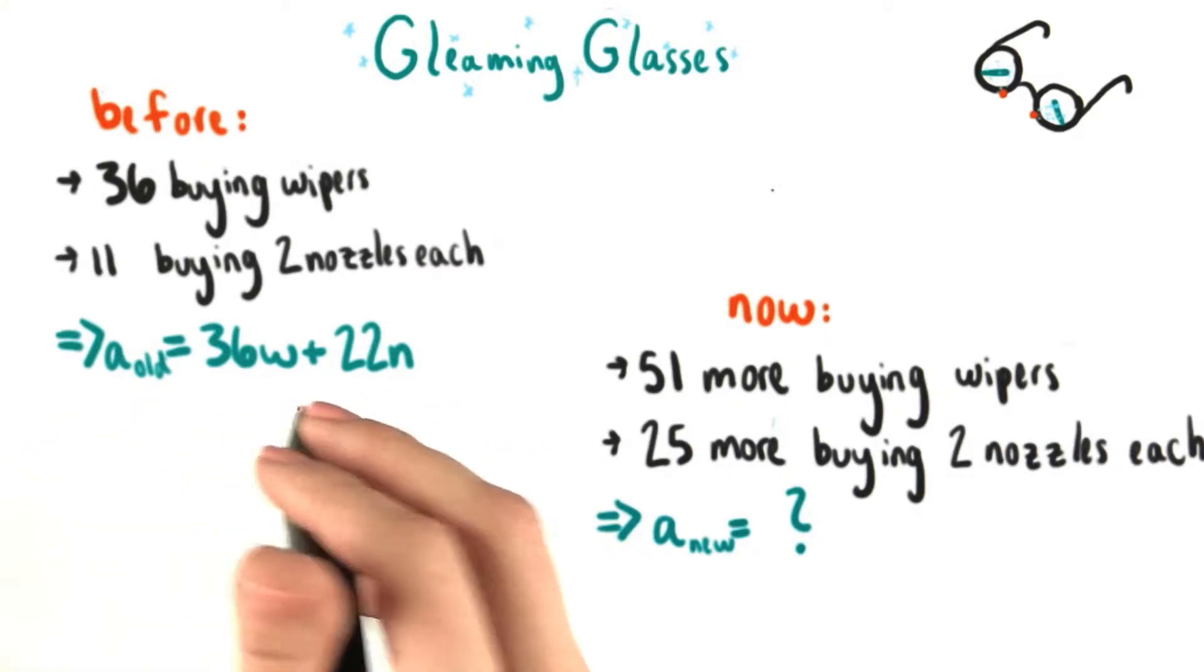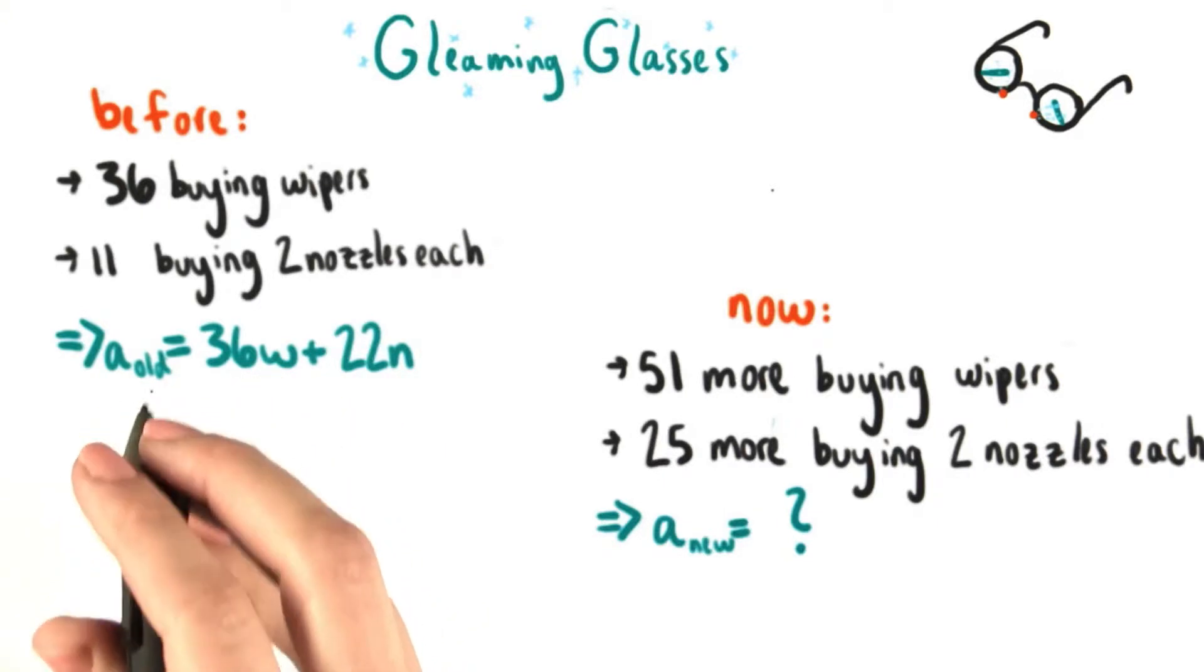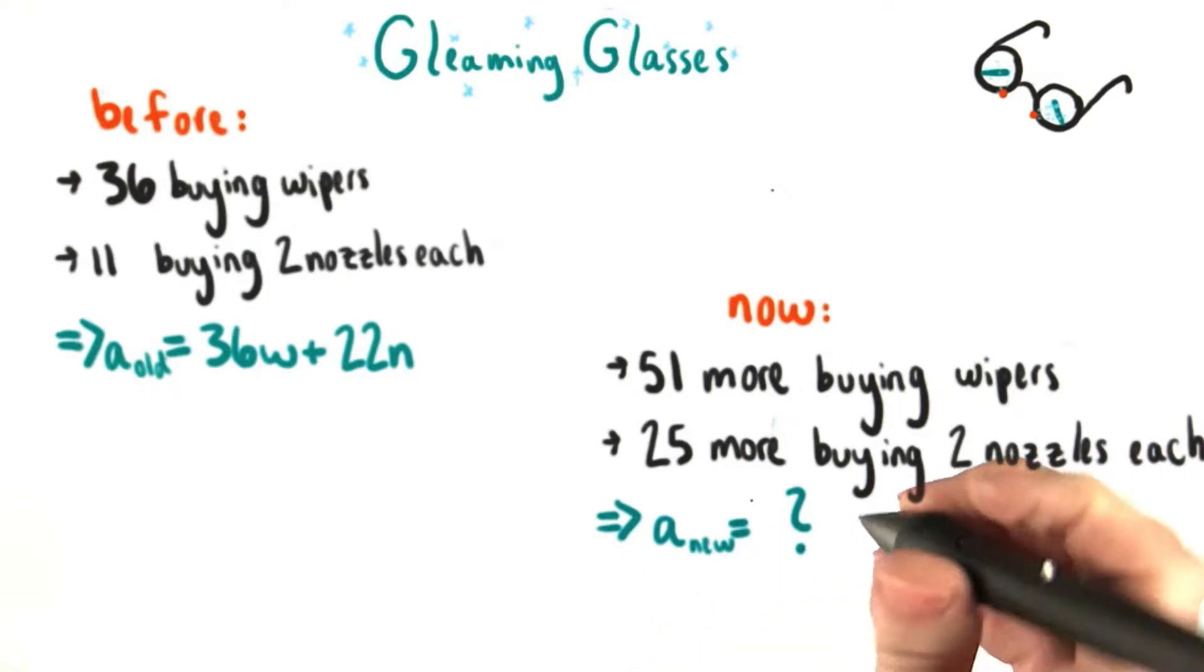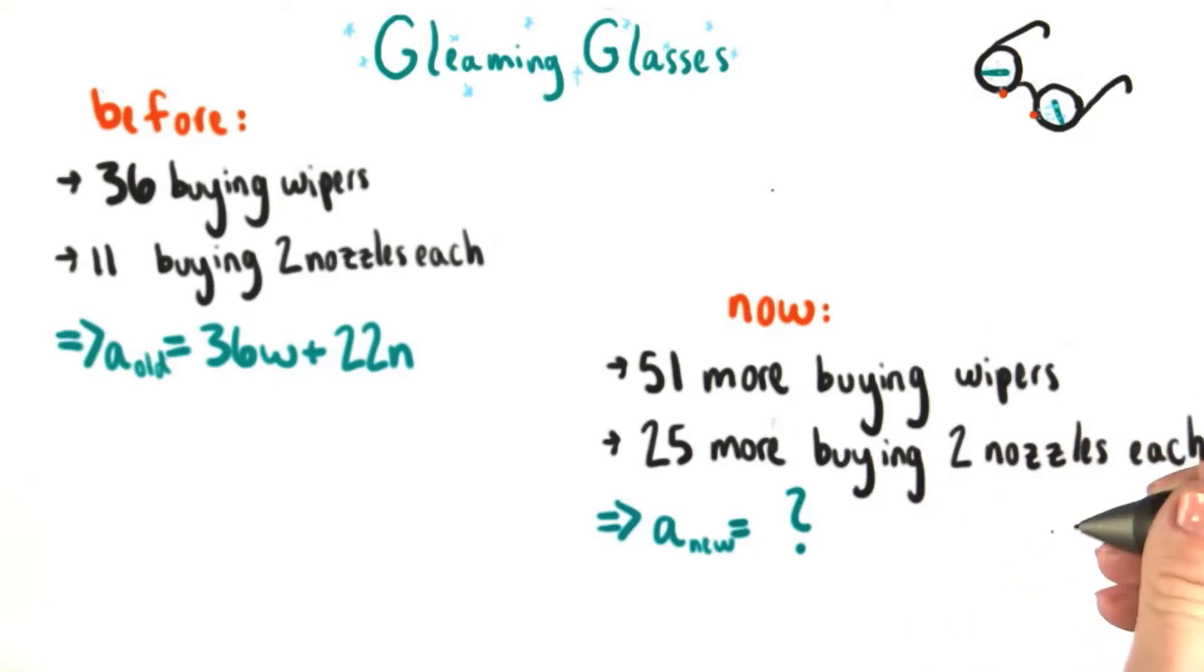This equation still works if we're only interested in calculating the money that Grant earned from his friends after just that one day. But now what we want to find is what I'm going to call A new, the money he's going to get from those people and from these new people who also want to buy.